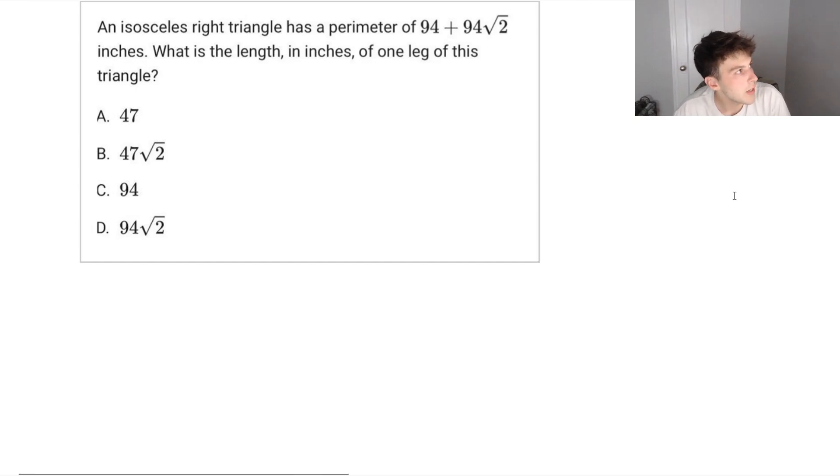Let's move on to the last question that we have. An isosceles right triangle has a perimeter of 94 plus 94 square root 2 inches. What is the length in inches of one leg of this triangle? Let's draw out this triangle here. It tells us that it's a right isosceles triangle. So it's going to look something like this, where these side lengths are the same. If this was our length, that means this other side will also be our length.